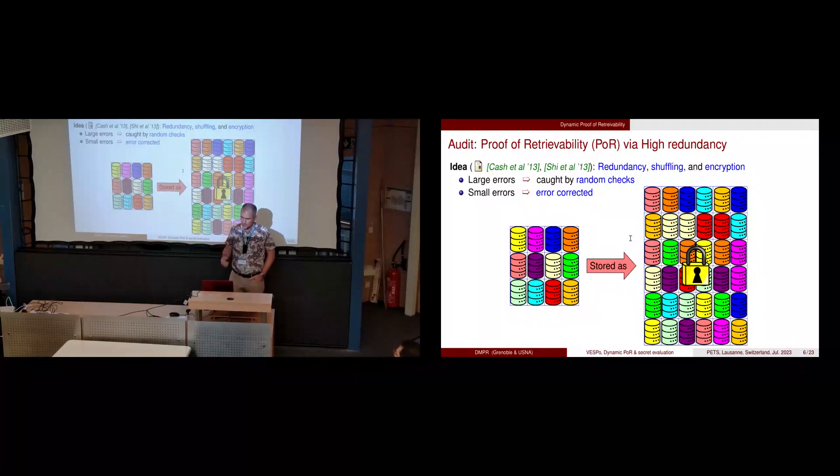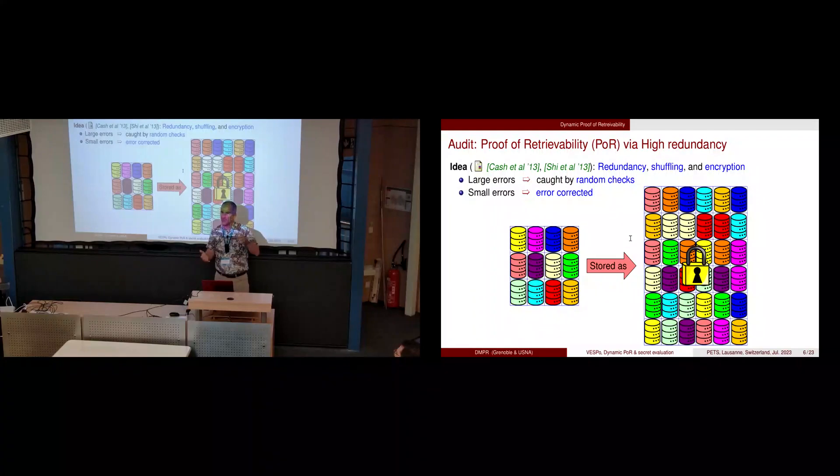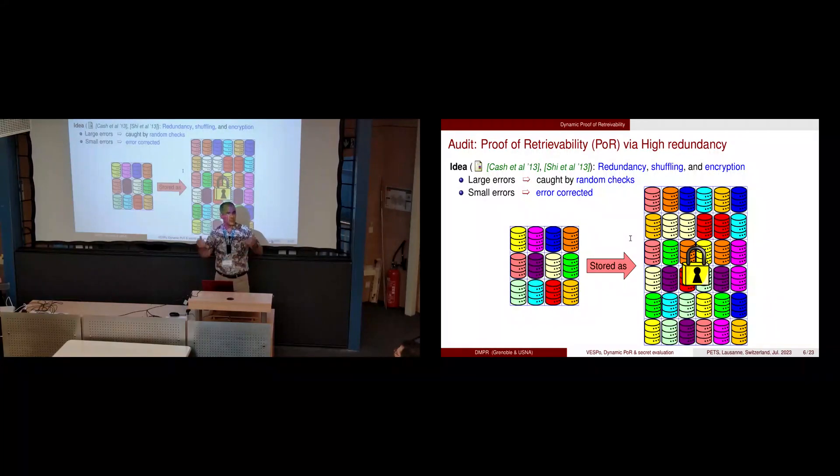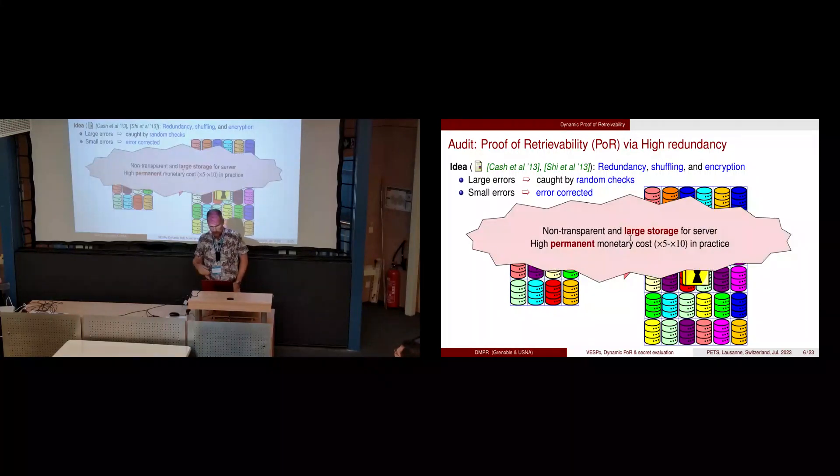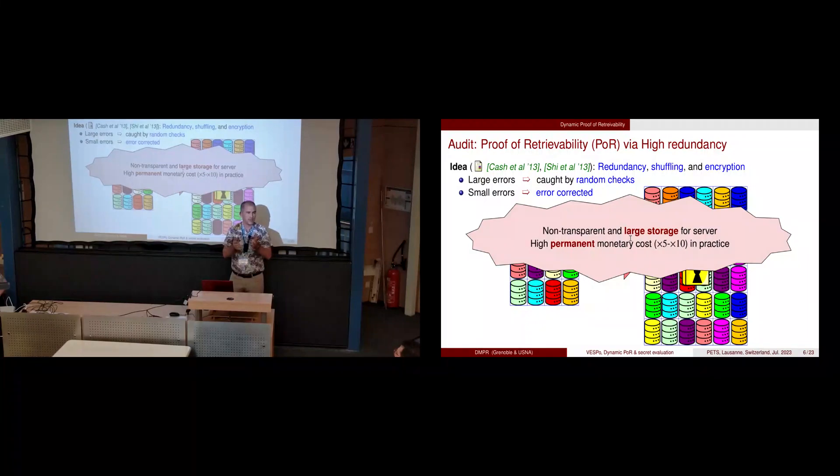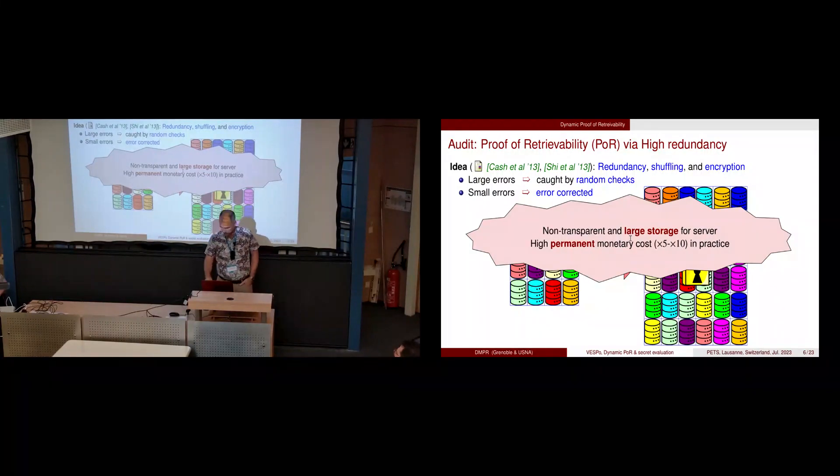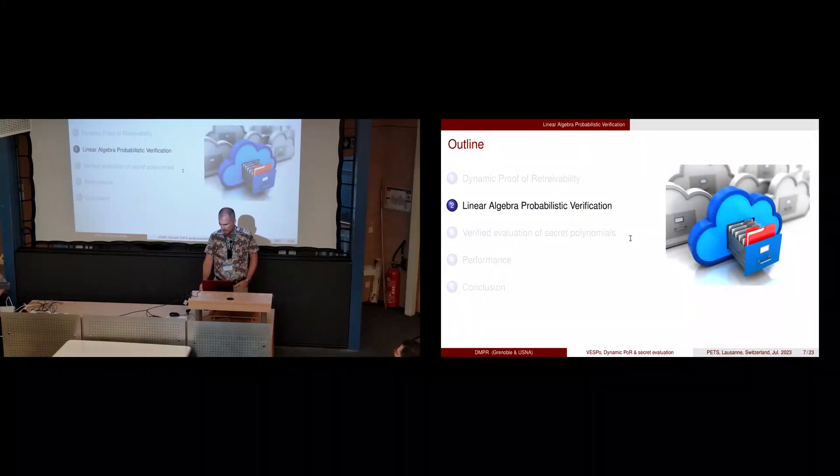Nice ideas in the setting were to use redundancy, shuffling, and encryption. You duplicate your data, and if there's a small error then you error correct it. If it's a large error, by random sampling you will probably catch some modifications. The drawback is that in practice you need five or ten times the amount of storage, which is very expensive.